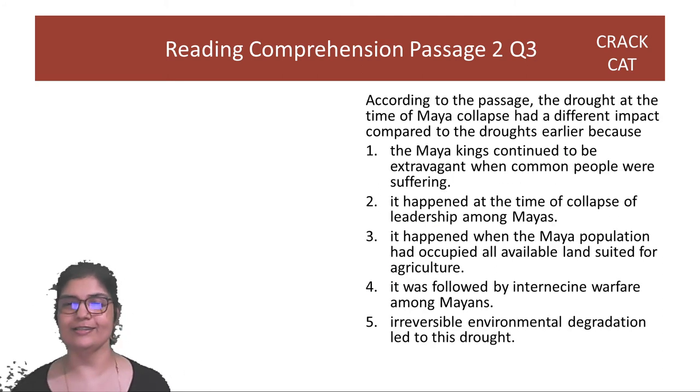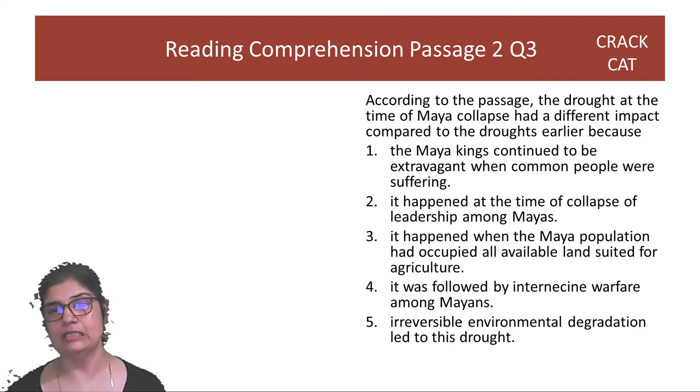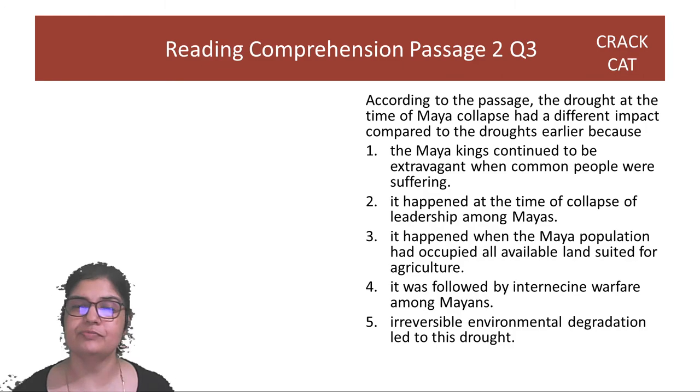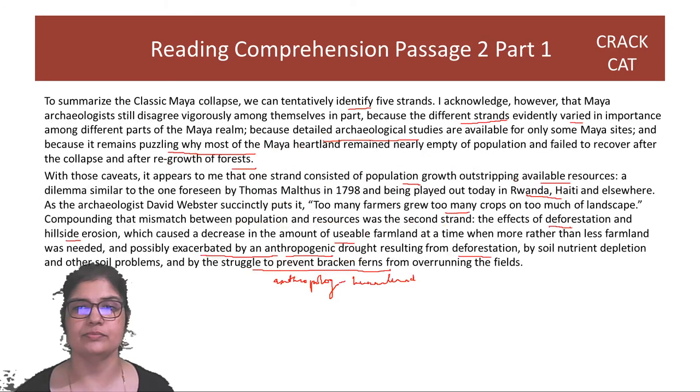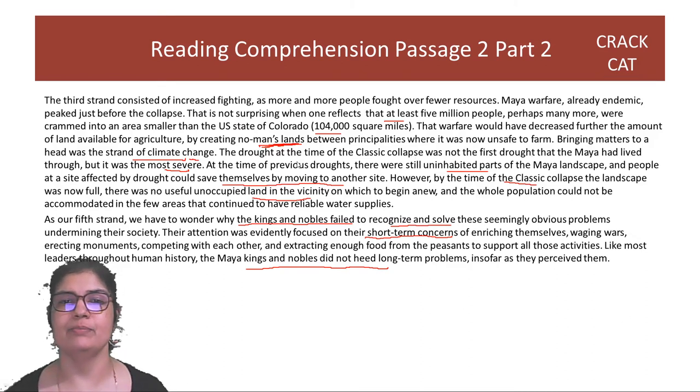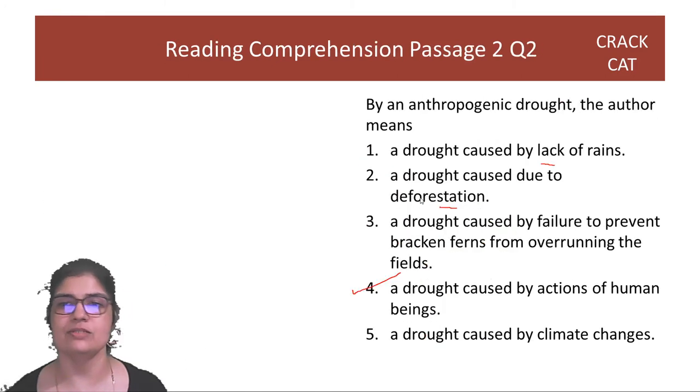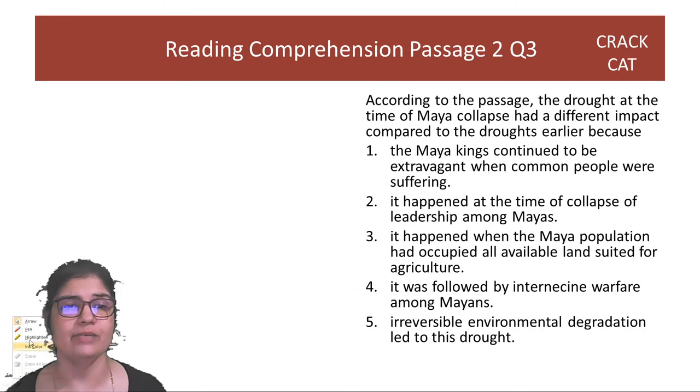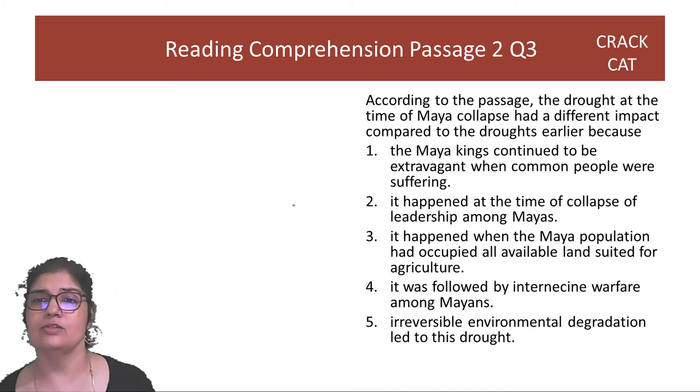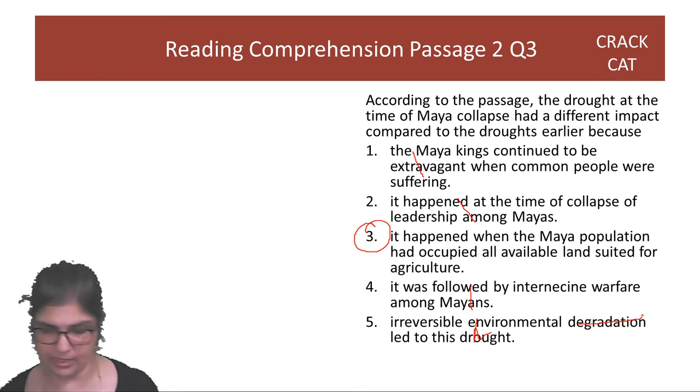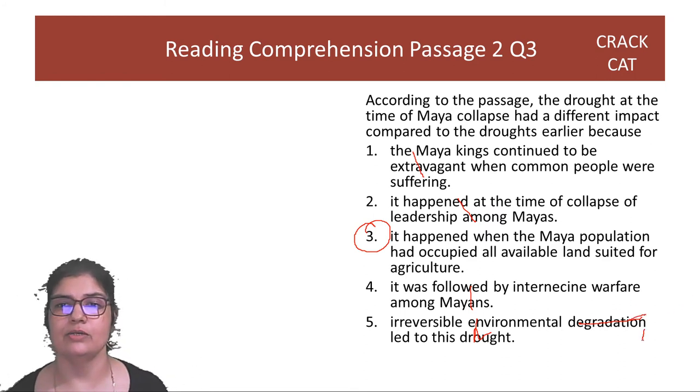Question two: By an anthropogenic—as I said, anthropology is humankind, anthropogenic means caused by humans. So not because of lack of rains or deforestation, it's a drought caused by actions of human beings. Question three: According to the passage, the drought at the time of Maya collapse had a different impact compared to earlier droughts. The droughts earlier, if you see, there were still uninhabited parts. So why was this a severe one? Because there was nowhere for people to go, absence of uninhabited land. You see guys, compared to the earlier passage, it's easier to eliminate options, easier to see the right answer. Maya kings came more or less towards the end, not with the drought. No leadership came later. It's not the warfare nor environmental degradation. The answer is three.